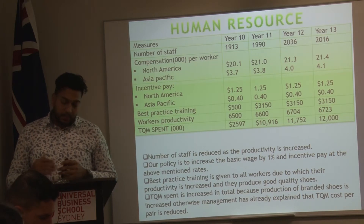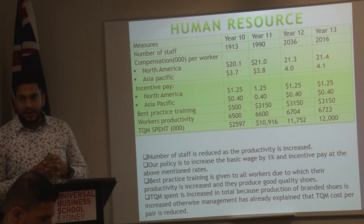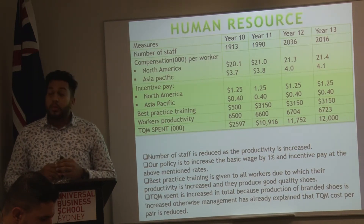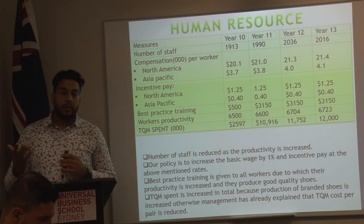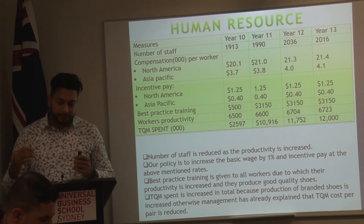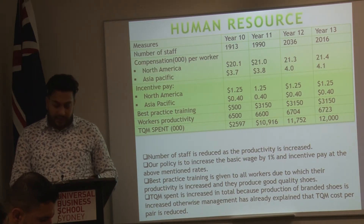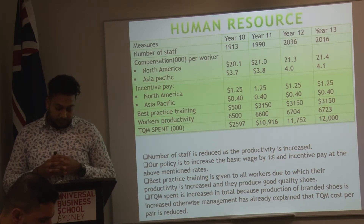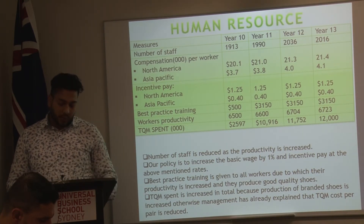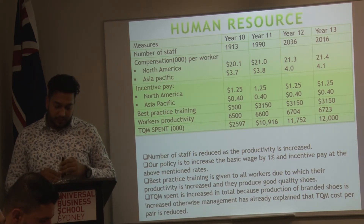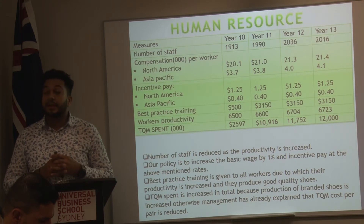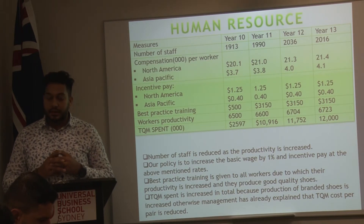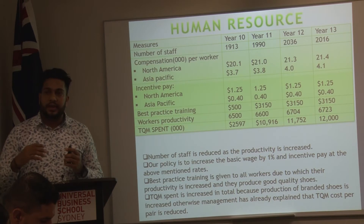Regarding compensation, according to our company policy we are giving workers compensation plus an incentive pay of 1% of their pay. For best practice training, we provide training to reduce the rejection rate of shoes, which cost around $500 in year 10 and increased to $31.50 remaining the same in year 13. For total quality management, we spent $25.97 in year 10, increasing to $10,916 in year 11, and approximately $12,000 in year 13 to maintain shoe quality.